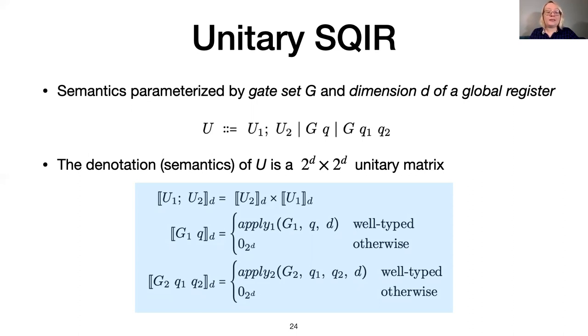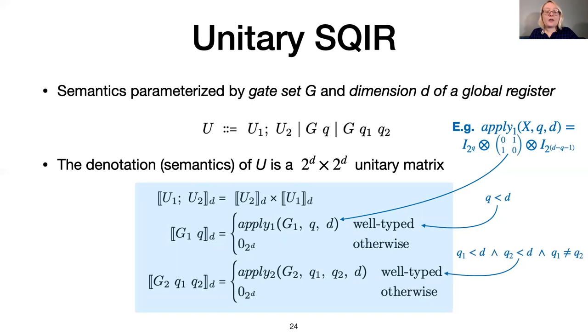If a gate application is well-typed, its semantics is the relevant unitary matrix extended to the appropriate dimension by padding with identity matrices. For example, the semantics of applying an X gate to qubit Q is a matrix constructed by a tensor product of the X matrix and identity matrices of the appropriate size. We say that a gate application is well-typed if all arguments are within bounds of the global register and no arguments are duplicated, which would violate the quantum no-cloning theorem. If a gate application is not well-typed, we define its semantics to be the zero matrix.